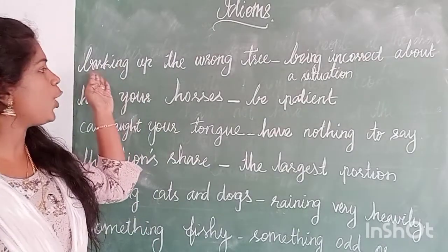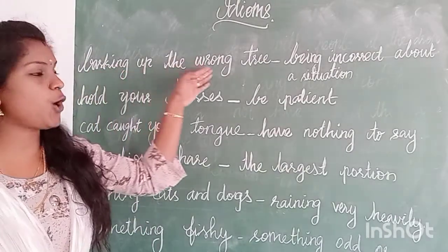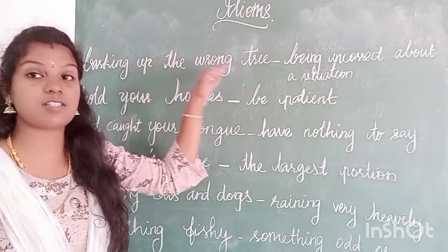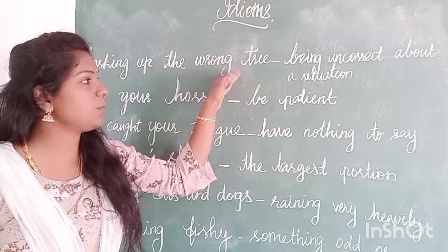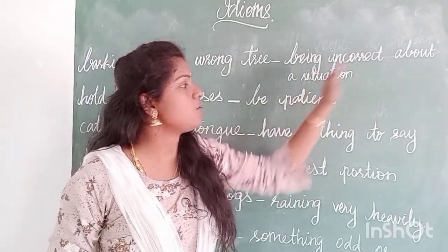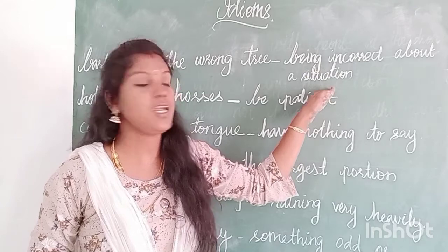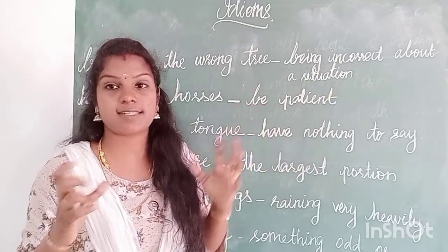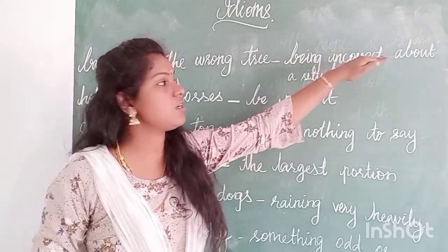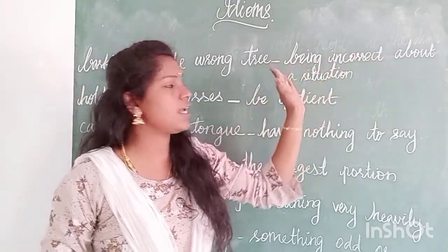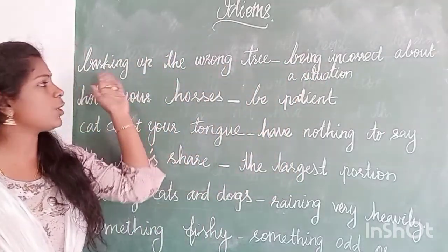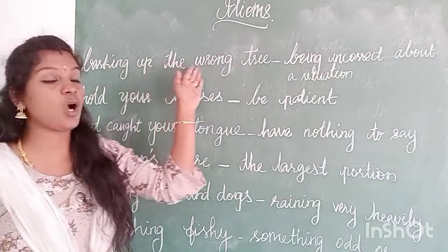Then, 'barking up the wrong tree.' Barking up the wrong tree means being incorrect about a situation — a misunderstanding. That is what barking up the wrong tree means.